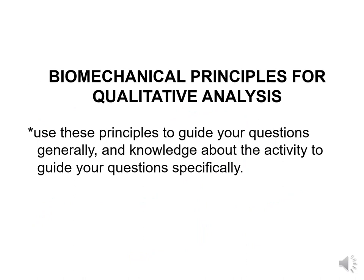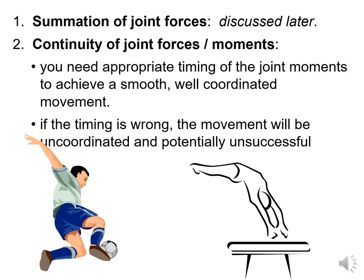When looking at the biomechanical principles for qualitative analysis, we need to use these principles — they guide our questions very generally, and we also need knowledge about the activity to guide questions more specifically. The steps of qualitative analysis involve several concepts. First is the summation of forces — the direction of movement is a product of the summation of forces. Next is the continuity of joint forces or moments: you need appropriate timing of joint movements to achieve a smooth, well-coordinated movement. If timing is wrong, the movement will be uncoordinated, potentially unsuccessful, and can be dangerous.